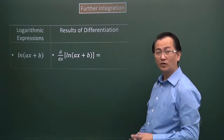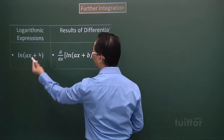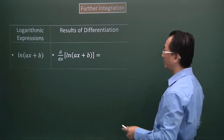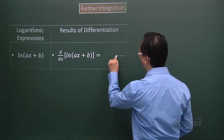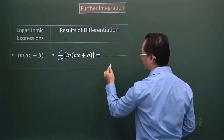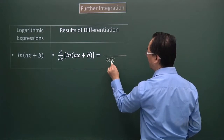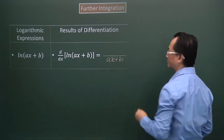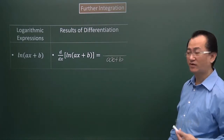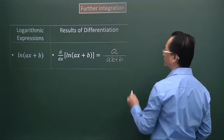We now look at the logarithmic expression: ln(ax + b). When I differentiate that, I get a fractional expression. Whatever is inside the log function is placed in the denominator. Differentiating ax + b with respect to x gives a, so the derivative is a over (ax + b).